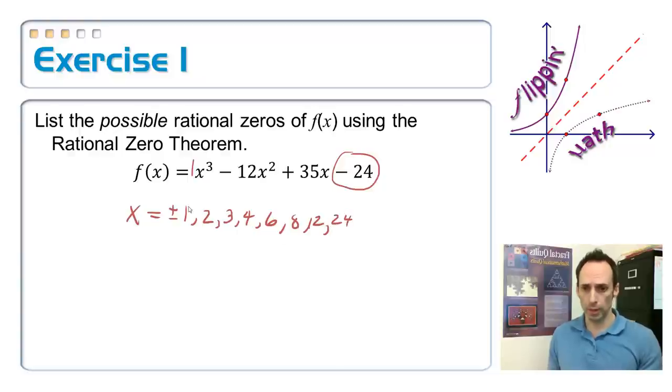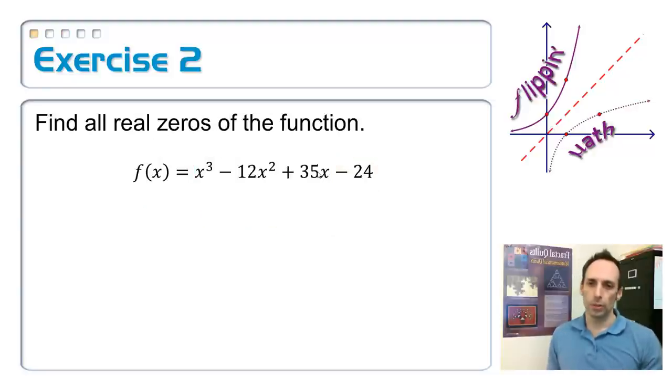That's 1, 2, 3, 4, 5, 6, 7, 8, times 2, or positive and negative, 16 different things that we could possibly have to test. So now let's find all of the zeros. We had the list on the previous example. Let's just try one of them, divide it out, see what the answer is. So how about we start with 1.